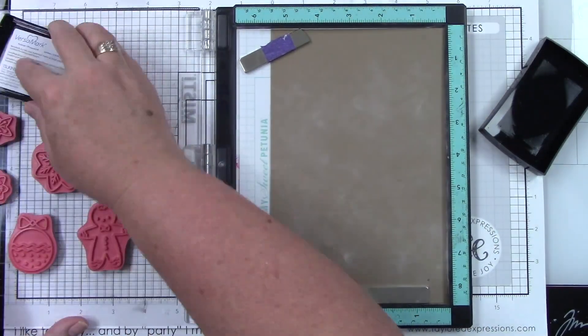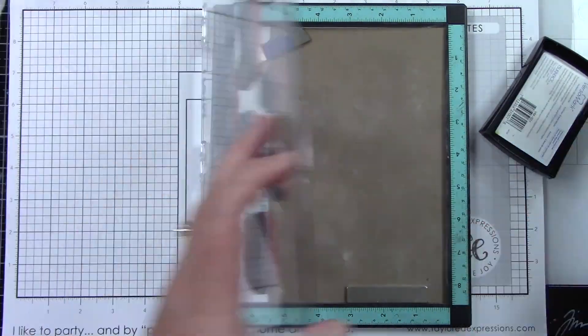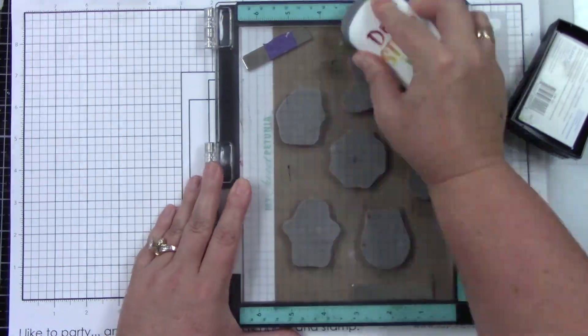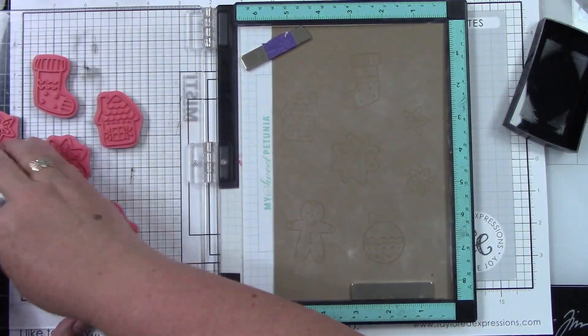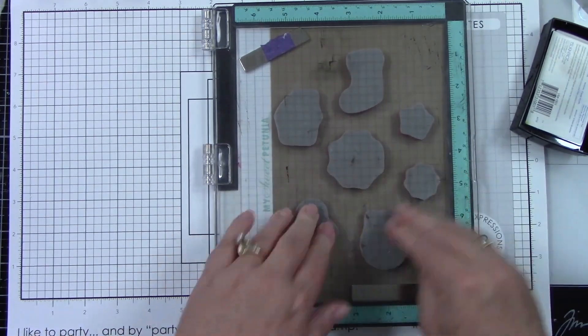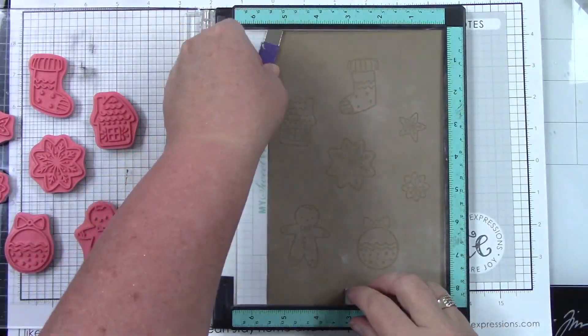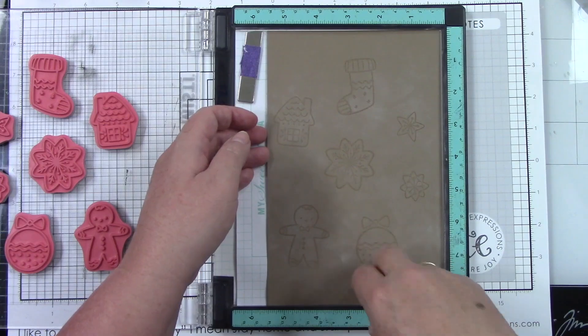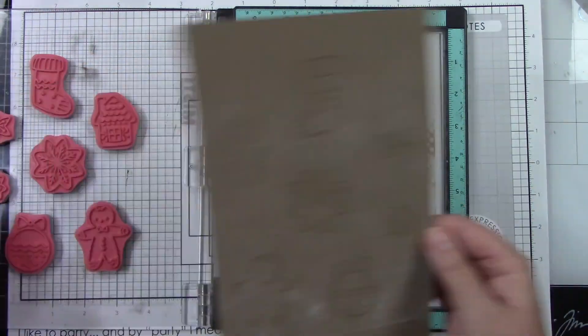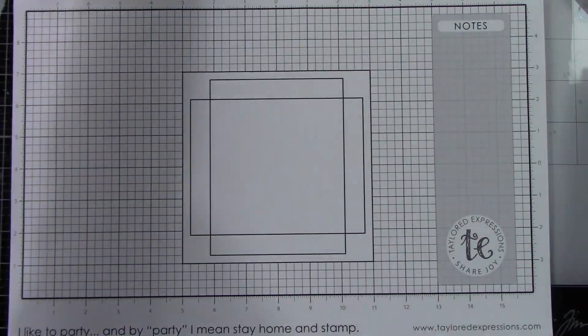I am going to use Versamark ink, and I usually ink it up twice to make sure I'm getting a really good impression. I do have my heat tool on already and getting nice and warmed up, which helps with less warping of your cardstock. Let me pull this out and then I'm going to sprinkle on my white embossing powder.